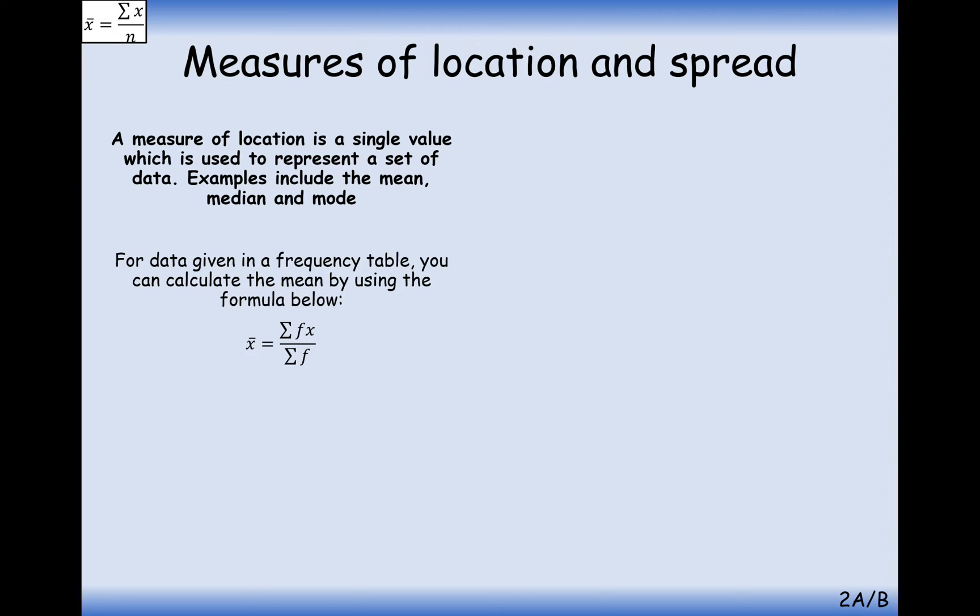Okay, so another way of writing the mean here is that x-bar is equal to the sum of fx over the sum of f. Now this here is particularly true for when we have a frequency table. Now you'll have done this lower down the school at GCSE, but let's see what the notation here means. The sum of fx means the sum of the products of the data values and their frequencies.